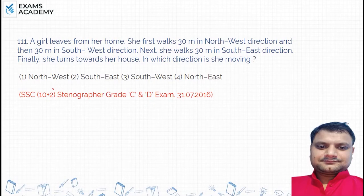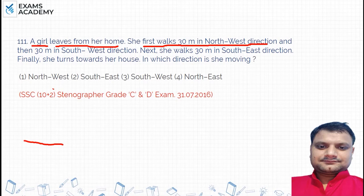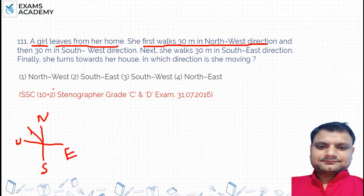A girl lives at her home. She first walks 30 meters in the north-west direction. Now, north-west direction — if you take this as north, this as south, this as east, and this as west — then between north and west, this is the north-west direction.